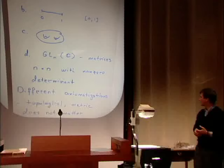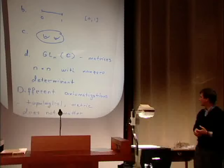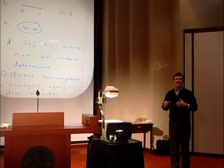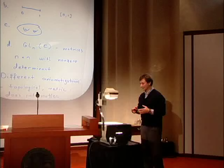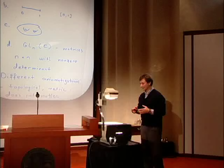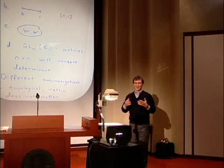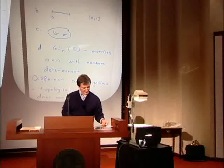There are many different axiomatizations of the notion of a space in mathematics — for instance, topological spaces and metric spaces. At the end, it all doesn't matter as long as one only considers non-pathological examples; it all comes to the same thing. So I will assume that there is some intuitive understanding of what a space is.